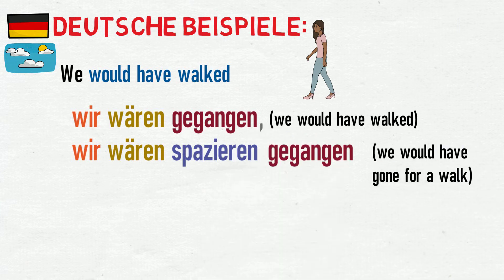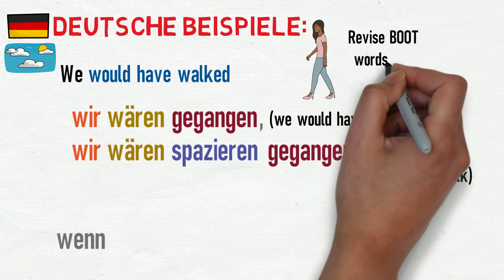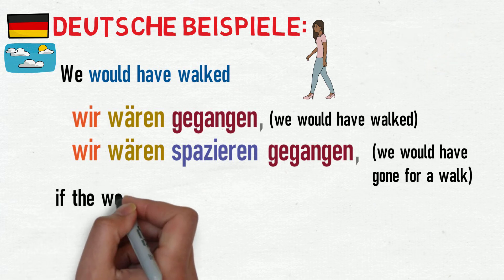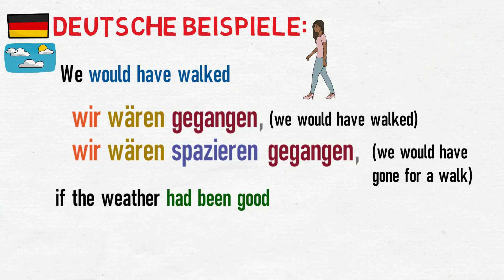To do the second clause, we need to use wenn, which is a subordinating conjunction. If you aren't sure how to use this, please go back and watch my video about word order with subordinating conjunctions by clicking the banner now. To say 'if the weather had been good', we are actually saying 'if the weather would have been good', and so we need another conditional perfect sentence. 'The weather was good' in the perfect tense is: Das Wetter ist gut gewesen.